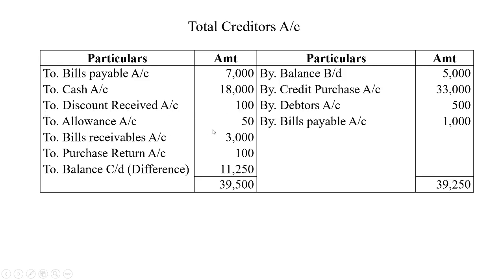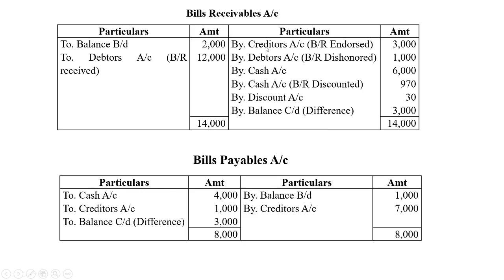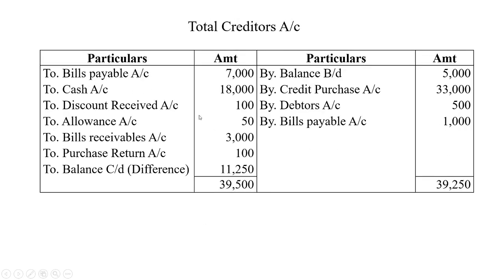Discount received — 100 rupees. Bills receivable endorsed — 3,000 rupees to creditors account. Purchase returns — recorded accordingly. Credit side total: 39,250 rupees. The difference of 11,250 rupees is the closing balance of creditors, entered as balance carried down — 11,250 rupees.